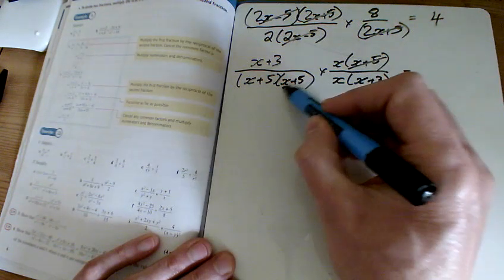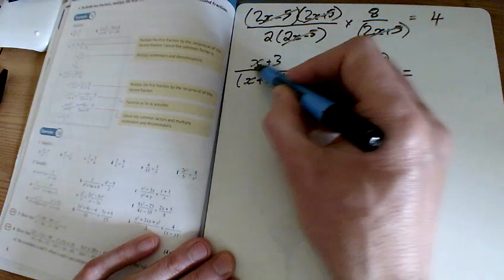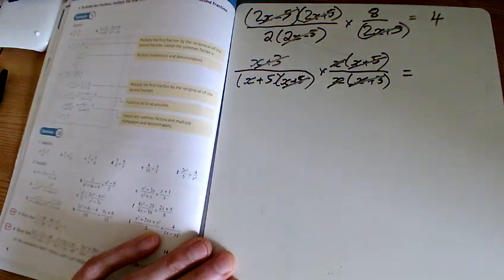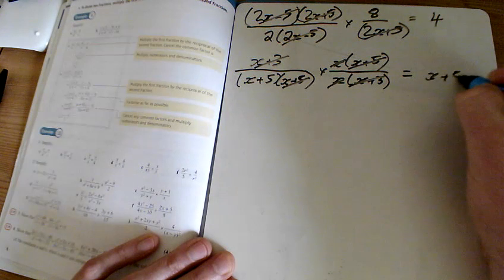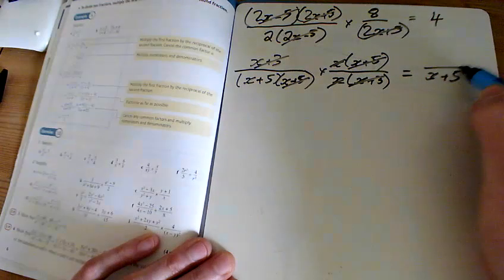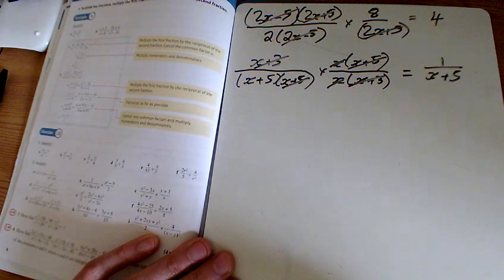Cancelling x plus 5 with the x plus 5, x with the x, the x plus 3 with the x plus 3. So be a bit careful here, the answer isn't x plus 5 because the x plus 5 is on the bottom. So it's 1 over x plus 5 is the answer for g.